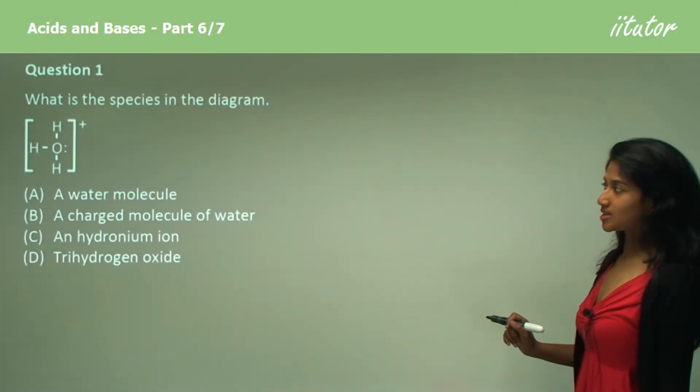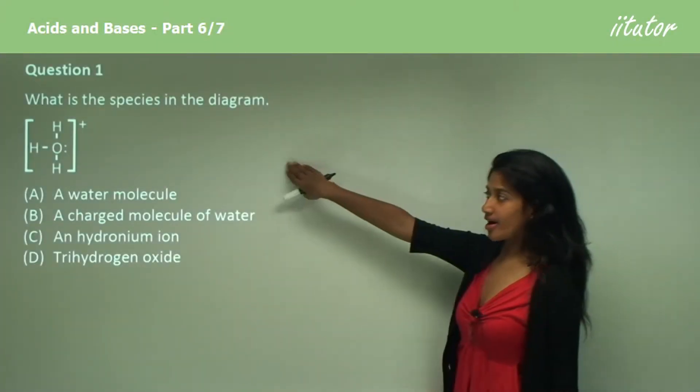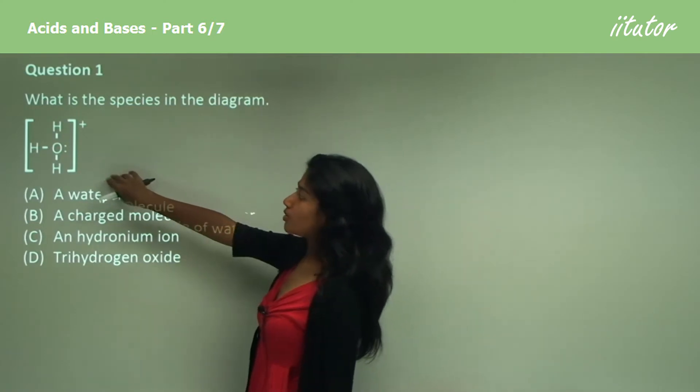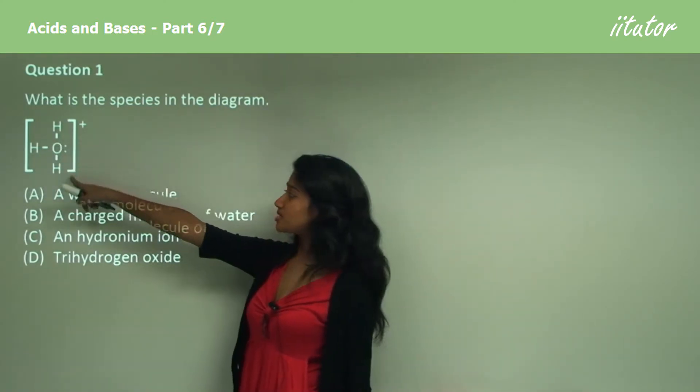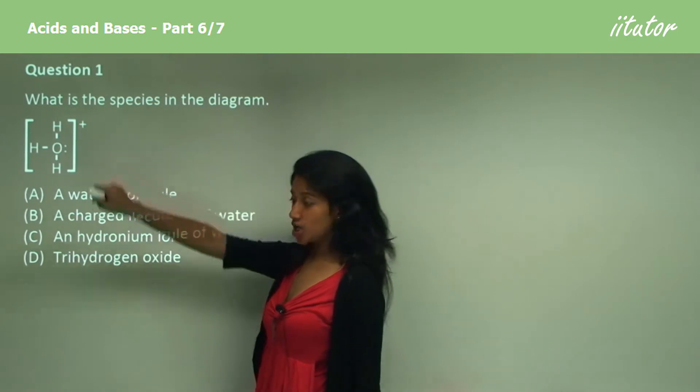What is the species in the diagram? So here's a diagram. It's a molecule, it has three hydrogen atoms, one oxygen atom and it is positively charged.